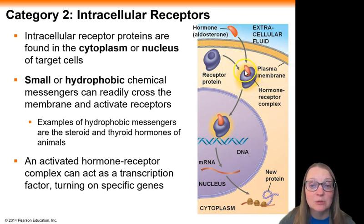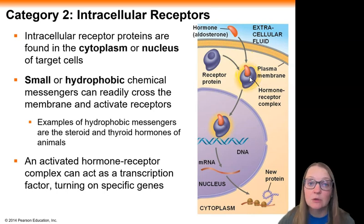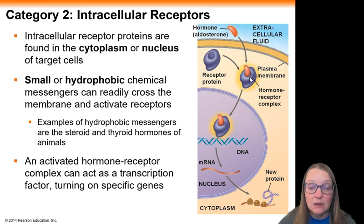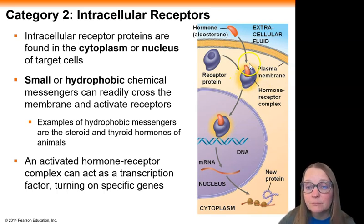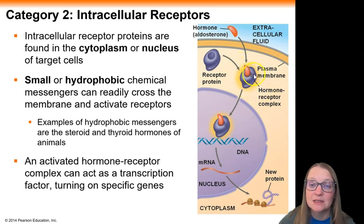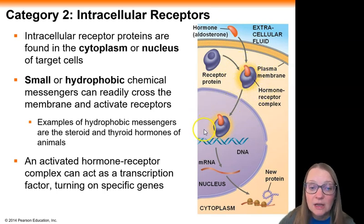It can find its receptor protein, and then once it finds the receptor protein — just like with the membrane-associated receptors — it'll activate the receptor. And then very typically, these hormone-receptor complexes might actually migrate into the nucleus and function as transcription factors.